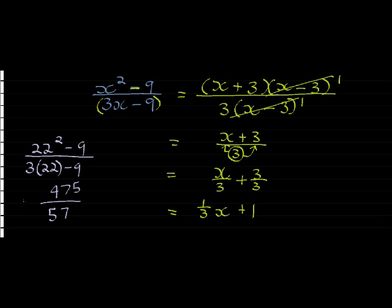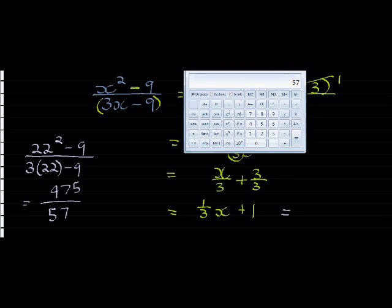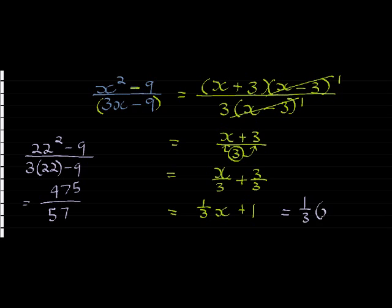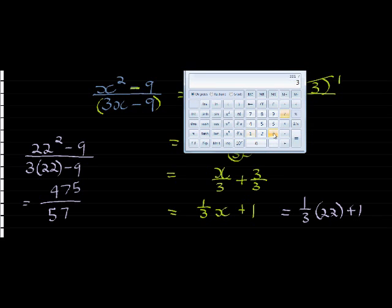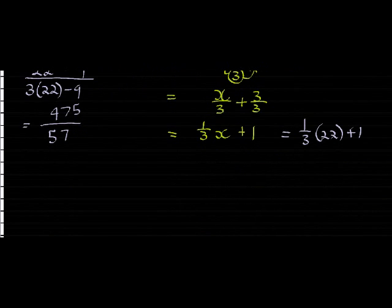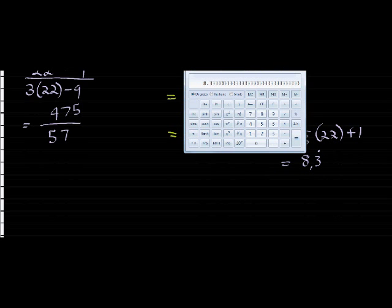475 divided by 57. I wonder if that's what we're going to get here. Let's see if we take our answer and put a 22 in x there. So 22, or actually a third. So we're going to take a third times 22 plus 1. Let's see what answer we get. 1 divided by 3 times 22 plus 1. And I get an answer of 8.333 repeating. So I get 8.3 repetitively.